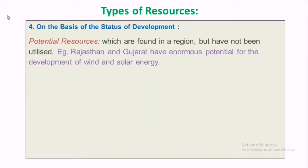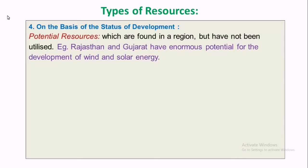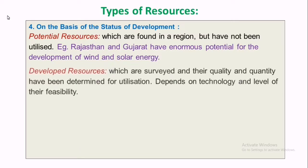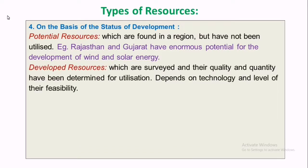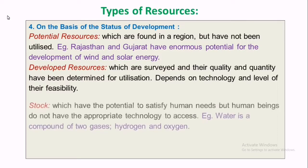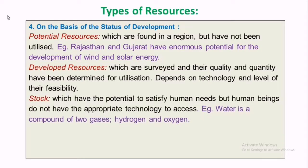The fourth classification is on the basis of status of development. First, potential resources — those found in a region but not yet utilized; for example, solar energy in Rajasthan and Gujarat. Developed resources are those we are currently using.